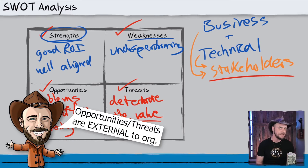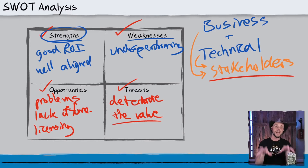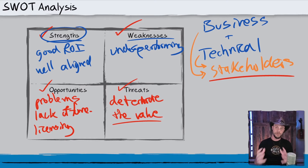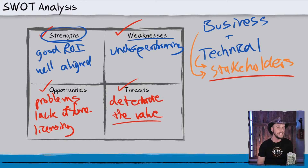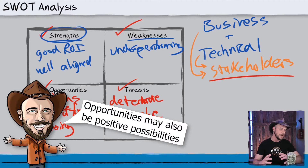Once you identify the strengths, weaknesses, opportunities, and threats of a particular service or solution, we can then prioritize which factors we've discovered are going to be the most important requirements moving forward. In the next couple of videos, we'll be talking about technical and business-related requirements and also some of that stakeholder discovery process as well.